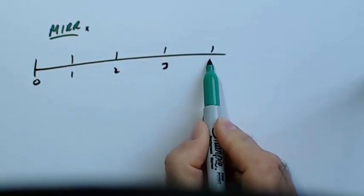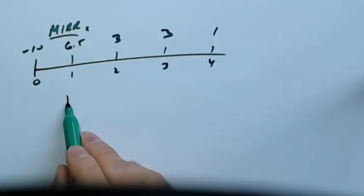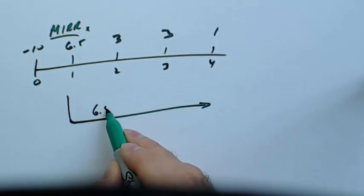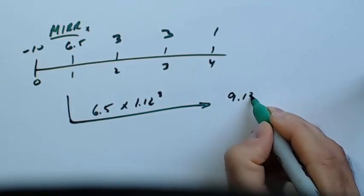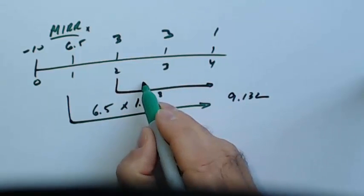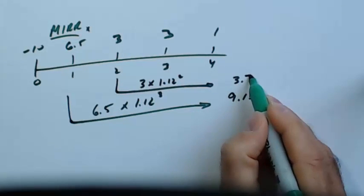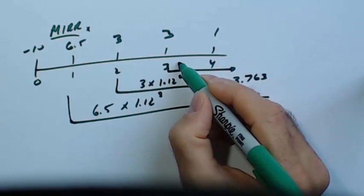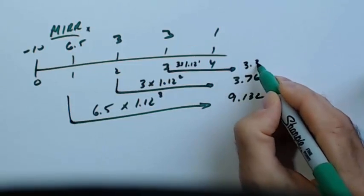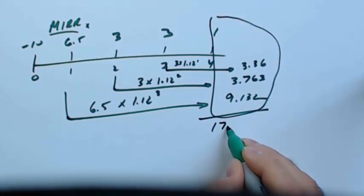Let's do the MIRR for Project X. Draw the timeline: minus 10, then 6.5, 3, 3, 3, and 1. We want to grow each cash flow forward to the end at 12%. The 6.5 grows 3 periods at 12% to become 9.132. The 3 grows 2 periods at 12% to become 3.763. The next 3 grows 1 period at 12% to become 3.36.